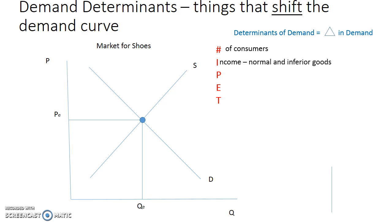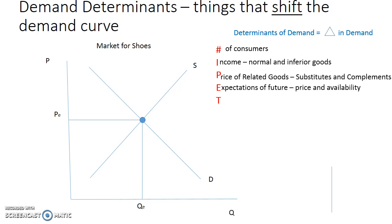I is for income, and there are two types of goods for that — normal and inferior goods, which we'll talk about a little later. P is for price of related goods: substitutes and complements — this one is prevalent on the AP exam. E is for expectations of the future, be it price or availability, meaning the price of something might go up in the future, so you might change your demand now because of what you expect to happen. The same is true with availability — if you think something won't be around, that may increase your demand currently.